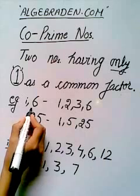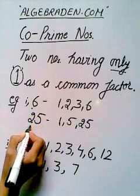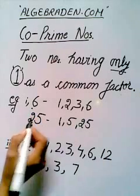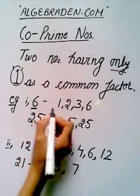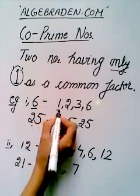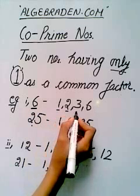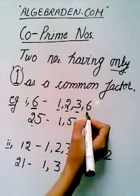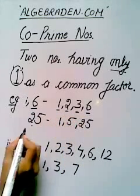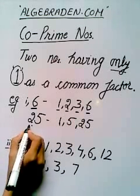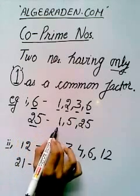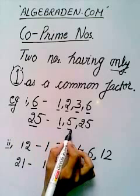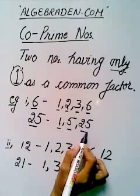For example, 6 and 25. Factors of 6 are 1, 2, 3 and 6. And factors of 25 are 1, 5 and 25.